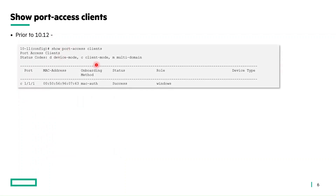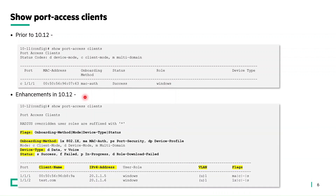First, let's see the show port access client show command. Prior to 10.12, this show command output displays the client port, MAC address, onboarding method, status, role, and device type. Here is the enhancement in 10.12 — the new enhanced show port access client show command will have additional columns like client name, IPv4 address, VLAN, and flags.